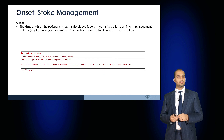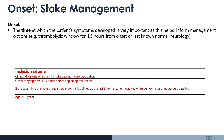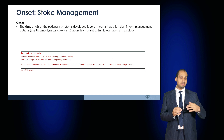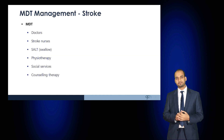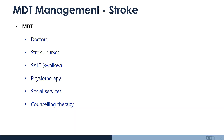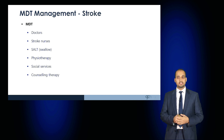It is important to document and ascertain the time of onset clearly. The thrombolysis window applies to patients who present within four and a half hours from the last known normal neurology — so if a patient wakes from sleep, the last known normal time is when they went to sleep. The MDT involved includes doctors, stroke nurses, speech and language therapists to assess swallow and prevent aspiration, and physiotherapists to help regain muscle strength, along with social services and counselling.